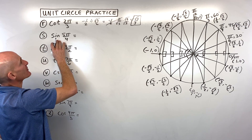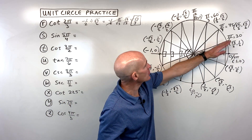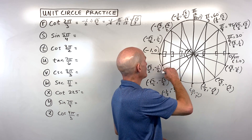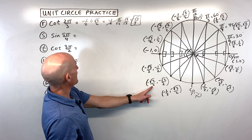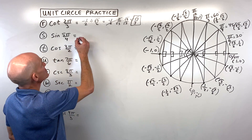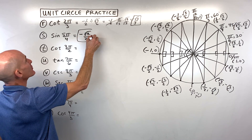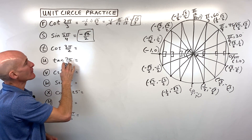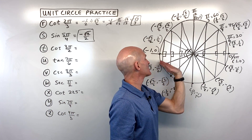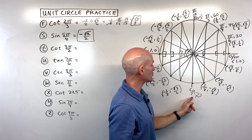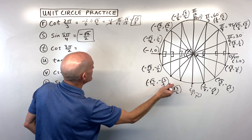Letter S: sine of 5π/4. Think of this as 1 and 1/4 π — go π plus another 1/4 of π, landing at the √2/2 coordinate in the third quadrant. Sine is the y-value: negative √2/2. Letter T: cosine of 3π/2. Think of this as 1 and 1/2 π — go π plus another half π, landing at (0, negative 1). Cosine is the x-coordinate: 0.